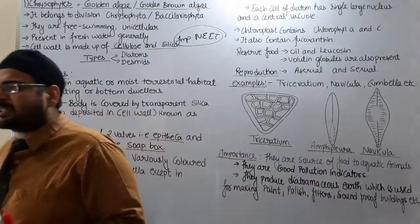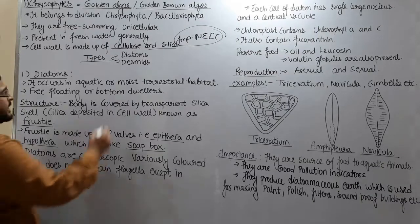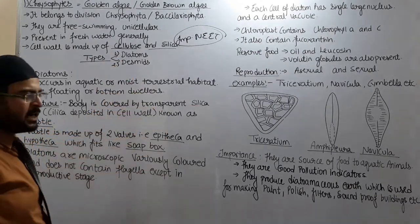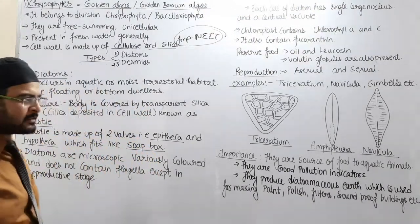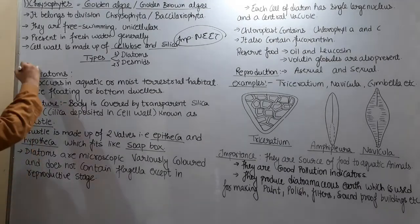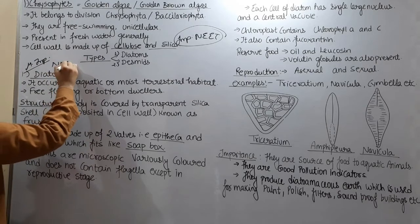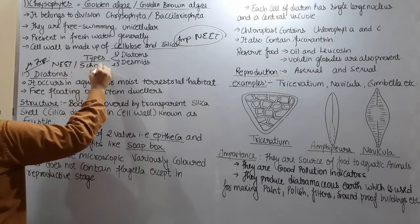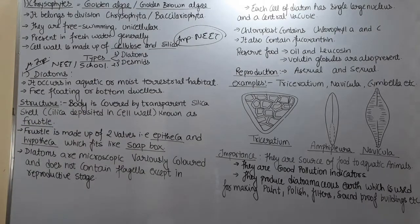Now we are coming to the Types of Chrysophytes. It is divided into two types: Number 1, Diatoms, and Number 2, Desmids. Diatoms are the most important for both NEET and School examinations — दोनों जगह पर ये पूछे जाने वाला question है, most important है.